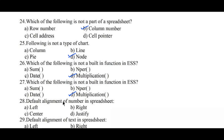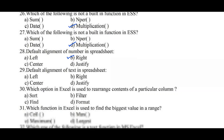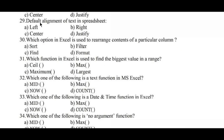Question number 28: What is the default alignment of numbers in a spreadsheet? Option A: left, B: right, C: center, D: justify. Option B, right, is the correct answer. Question number 29: What is the default alignment of text in a spreadsheet? Option A: left, B: right, C: center, D: justify. Option A, left, is the right answer. Question number 30: Which option in Excel is used to rearrange the contents of a particular column? Option A: sort, B: filter, C: find, D: format. Option A, sort, is the correct answer.